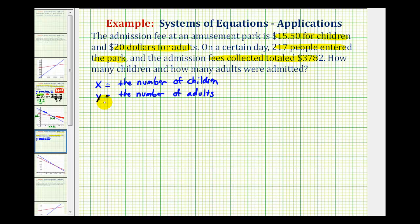Well if x is the number of children and y is the number of adults and there were 217 people in the park that day, this tells us that x plus y must equal 217.